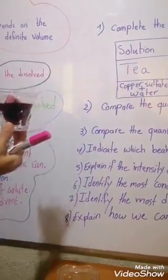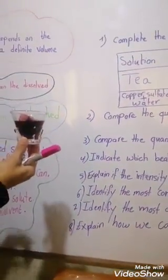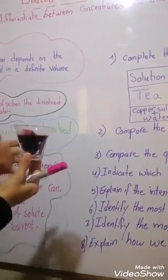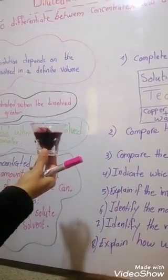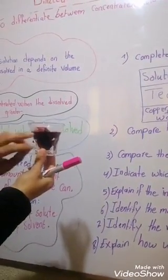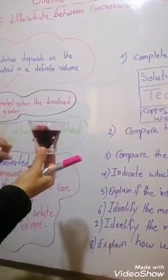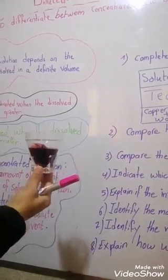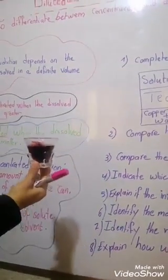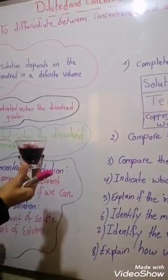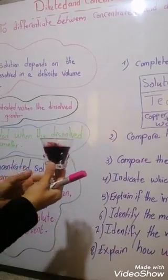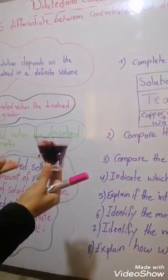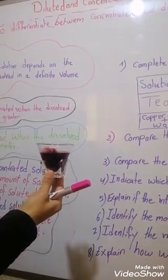Alternatively, we can evaporate part of the solvent by placing it on a Bunsen burner in order to evaporate part of the solvent, which makes it more concentrated.